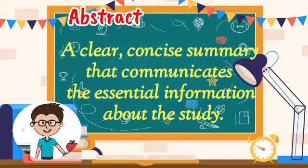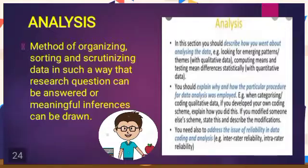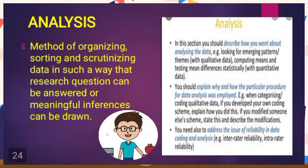Abstract is a clear, concise summary that communicates the essential information about the study. In research journals, it is usually located at the beginning of an article. Analysis is a method of organizing, sorting, and scrutinizing data in such a way that research questions can be answered or meaningful inferences can be drawn. In this section, you should describe how you went about analyzing the data, explain why and how the particular procedure was employed, and address the issue of reliability in data coding and analysis.